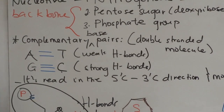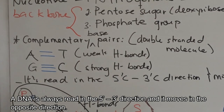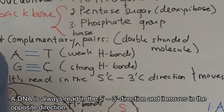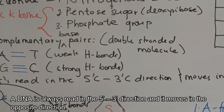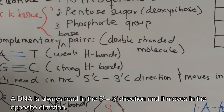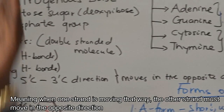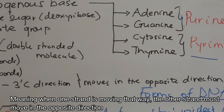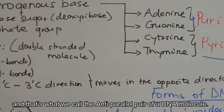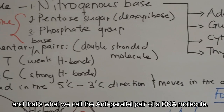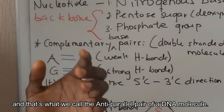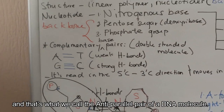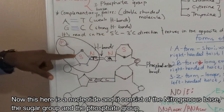DNA is always read in the five prime to three prime direction, and the two strands move in opposite directions — when one strand is moving one way, the other strand must move in the opposite direction. That's what we call the antiparallel nature of a DNA molecule.